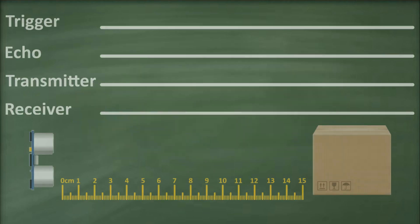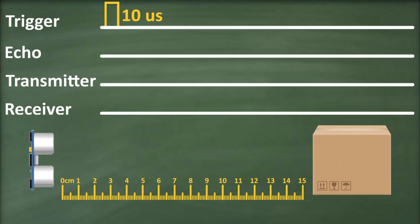Now let's explore how to calculate the distance to an object using this sensor. After supplying 5 volts and ground to the VCC and GND terminals, we set the trigger pin high for about 10 microseconds, then set it to low. Essentially, we send a high pulse of 10 microseconds over the trigger pin.